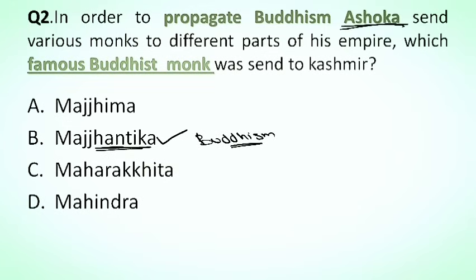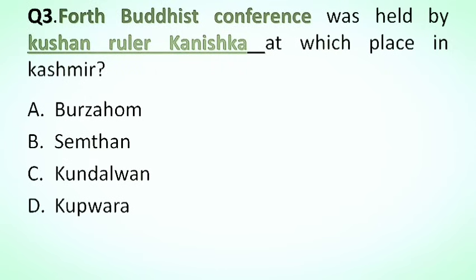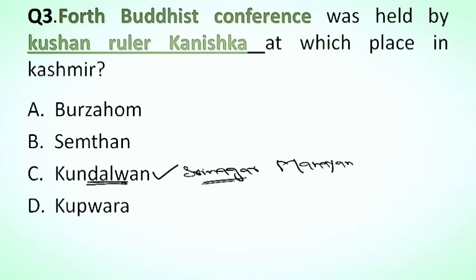Our next question is: the Fourth Buddhist Conference was held by Kushan ruler Kanishka at which place in Kashmir? Options: A. Burzahama, B. Simthan, C. Kundalvana, D. Kupwara. The correct answer is option C, Kundalvana. This place is located in Srinagar. It was during this conference that Buddhism got divided into two sects: Mahayana and Hinayana. Kanishka was a follower of the Mahayana sect.